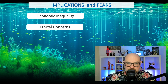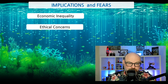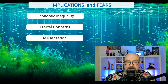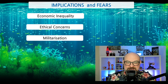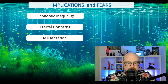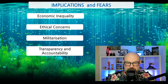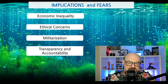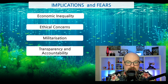Ethical concerns: as AI becomes more capable of more complex tasks, there will be more ethical questions that arise — we'll come back to this later. Militarization: the use of AI in warfare, including autonomous weapons, raises concerns about the potential for escalated conflicts and reduced human intervention in the decision to use lethal force. Transparency and Accountability: many AI models, especially deep neural networks, operate as black boxes — their decision-making processes are not easily understood by humans, which can hinder accountability.